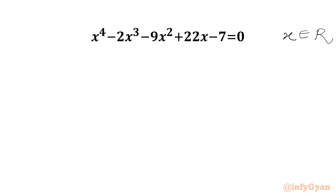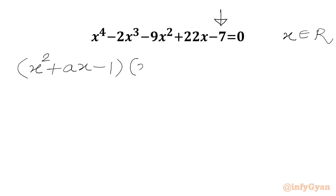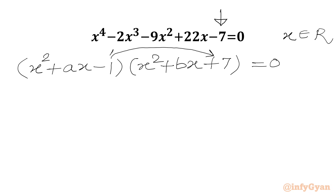So let's get started. I will write our left hand side as a product of 2 quadratics. As we have -7 as a constant, we can write factors (x² + ax - 1)(x² + bx + 7). Once we multiply -1 with +7 we get -7 as a constant.